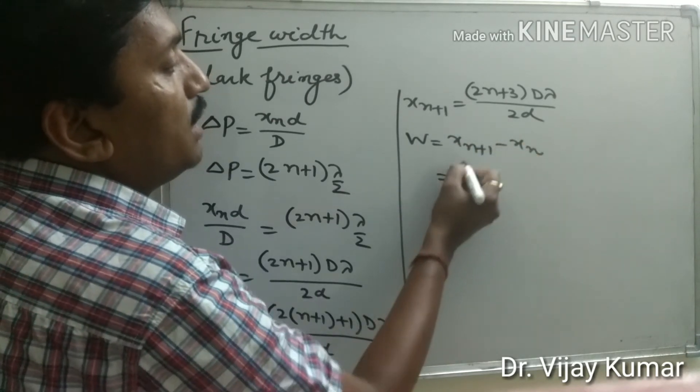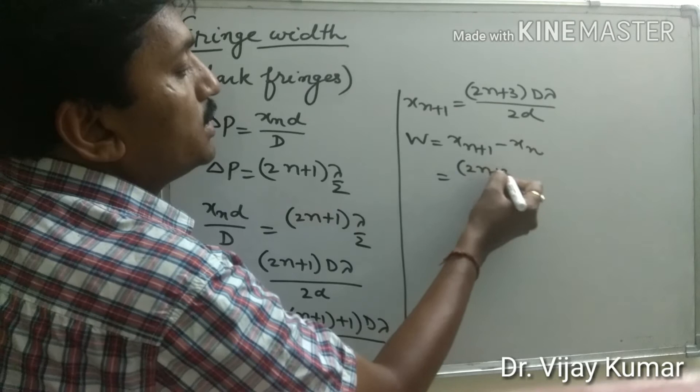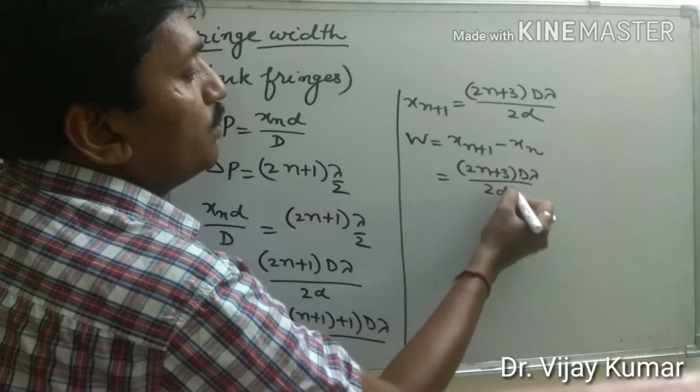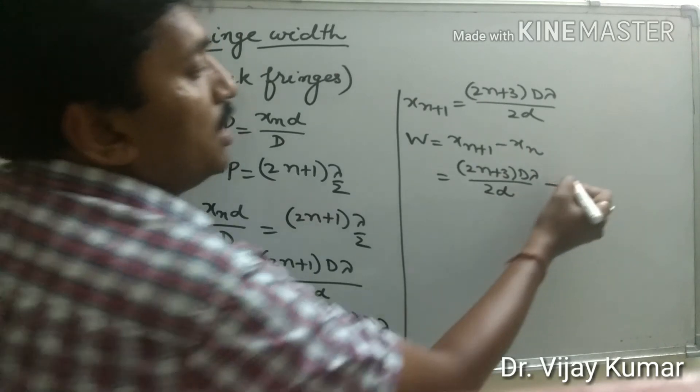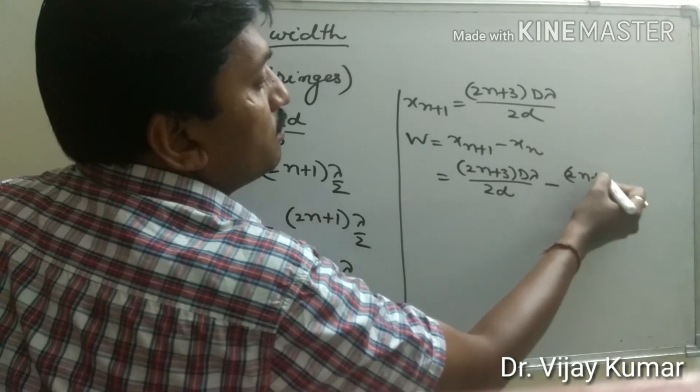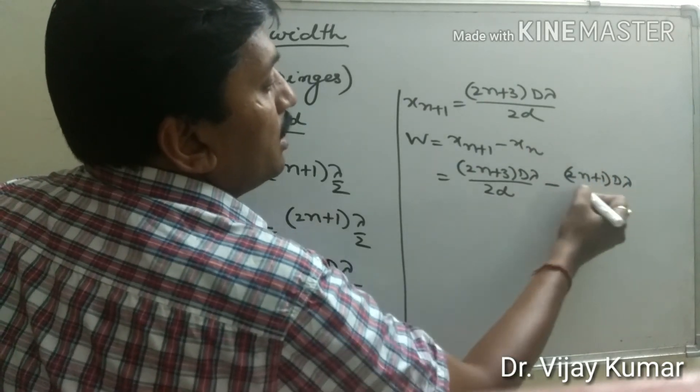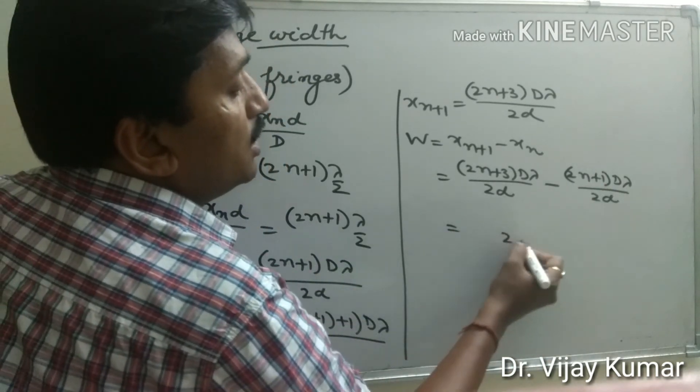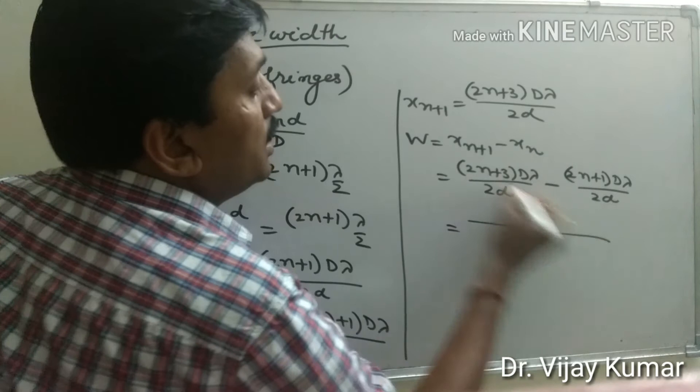We can write W = [(2n+3)Dλ/2d] - [(2n+1)Dλ/2d], where the first term is the value of xn+1 and the second is the value of xn.